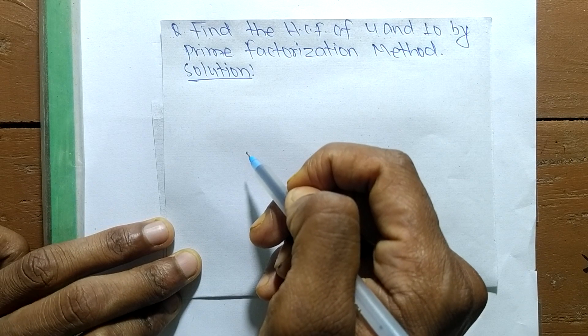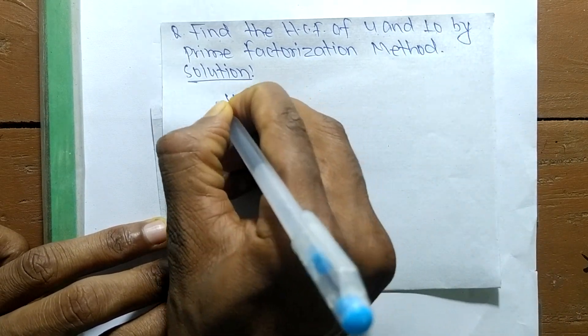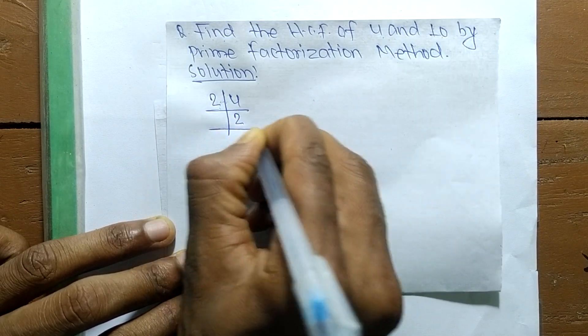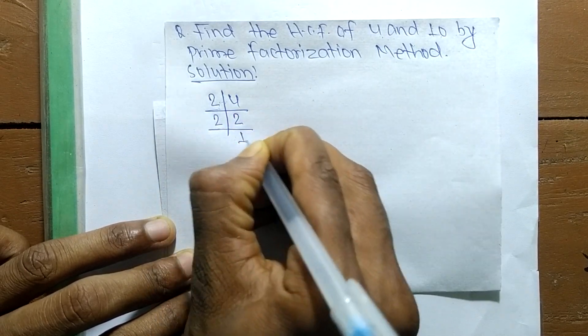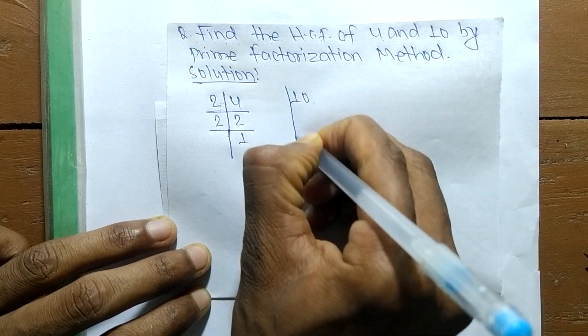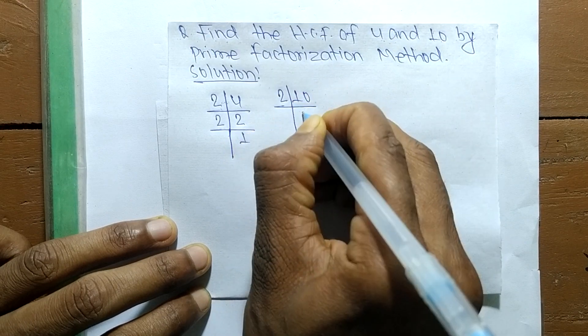First, we find out the prime factors of 4. So it is 2 times 2, which equals 4, and 2 times 1 equals 2. In the same way, the prime factors of 10 are 2 times 5 equals 10.